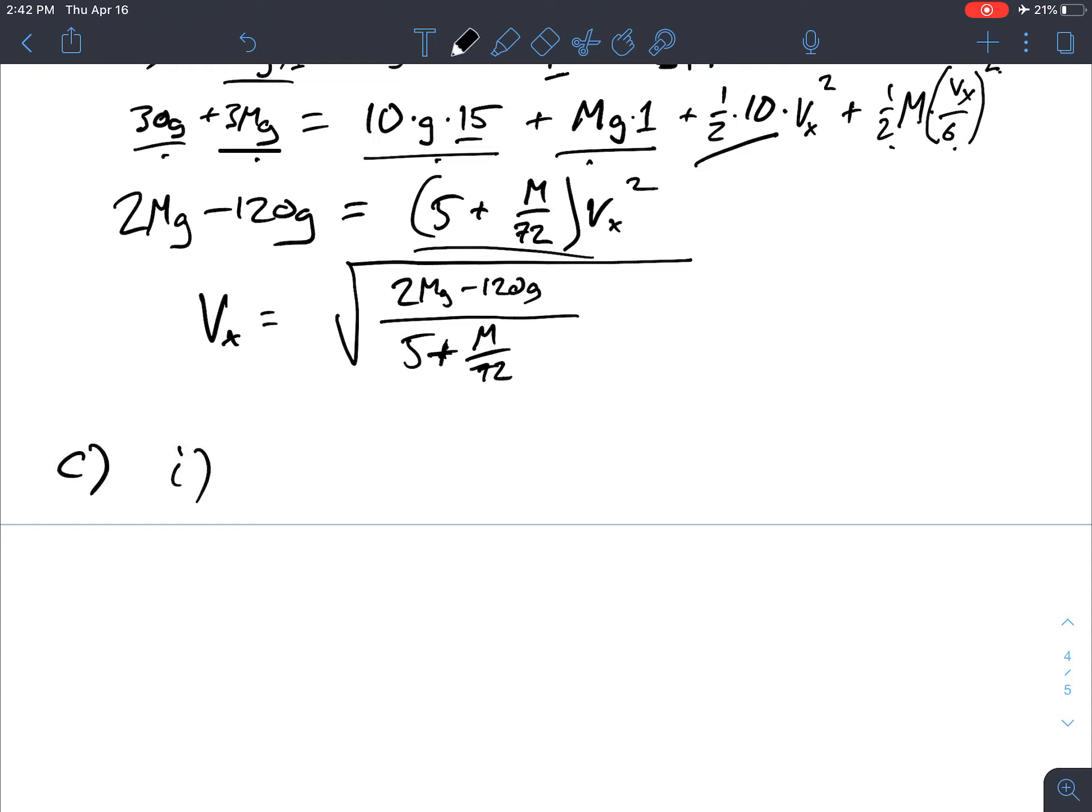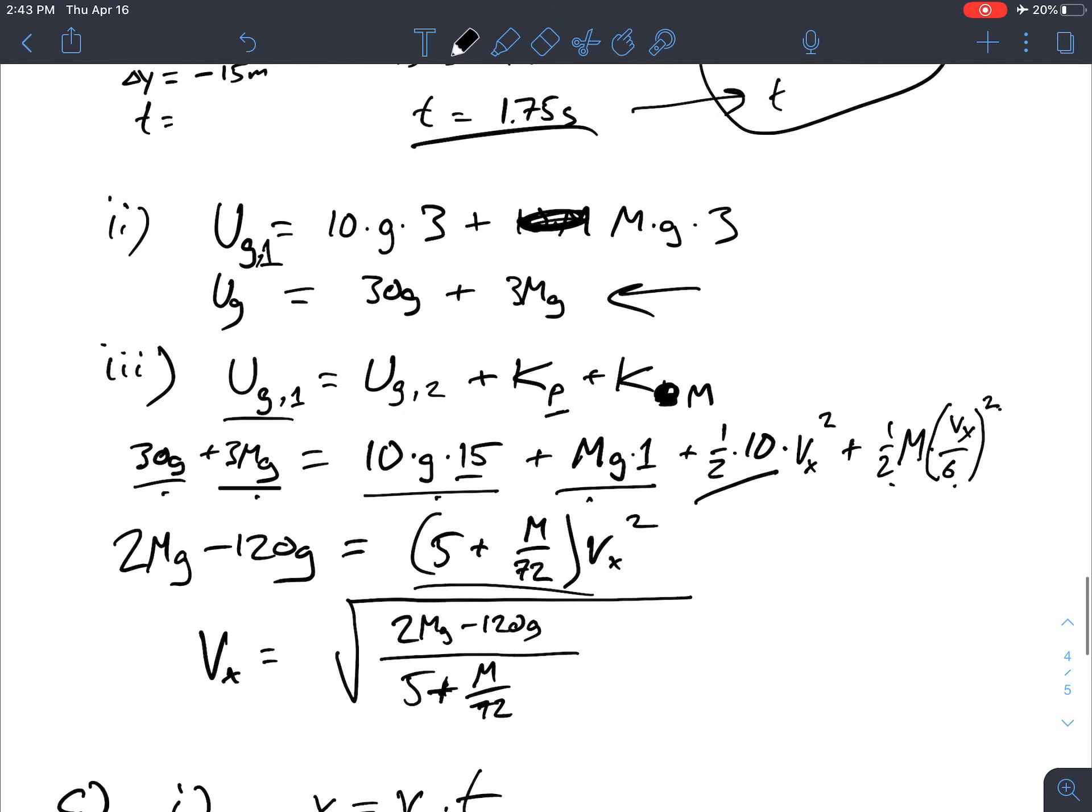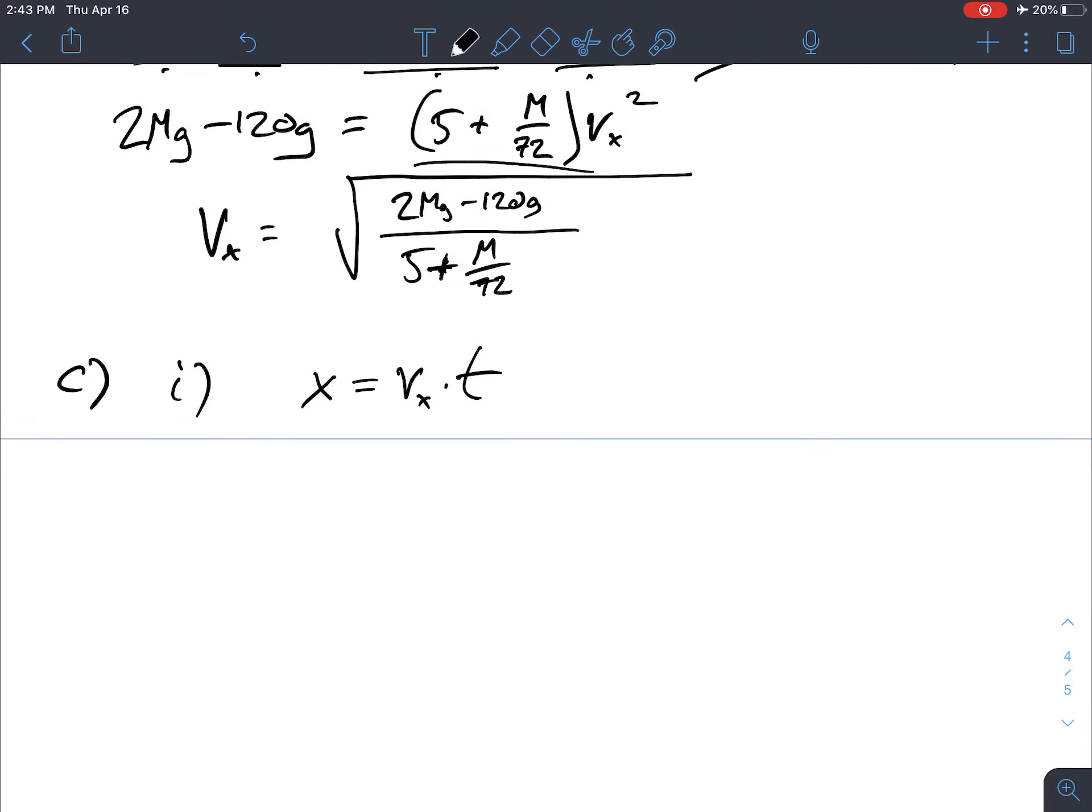This is C1. So since vx, so we got x is equal to vx times t, just in case you didn't know that, they told us. Of course we know that because the horizontal velocity is constant. And now I've got x is equal to that expression, 2Mg minus 120g over, 72 times 1.75. So something like that.